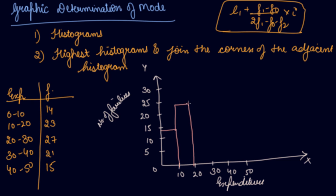From 20 to 30, plot 27 families. From 30 to 40, plot 21. From 40 to 50, plot 15.